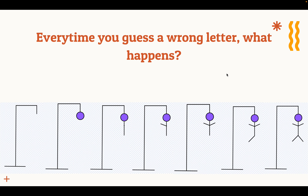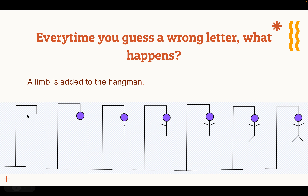Before we learn more about costumes and start making costumes, let's look at it from the lens of Hangman specifically. In a game of Hangman, every time you guess a wrong letter, what happens? Pause the video and try to say out loud what happens when you guess a wrong letter. The answer is that a limb is added to the Hangman. Every time you guess a wrong letter, a limb is added.